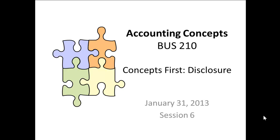Hello, this is a Camtasia PowerPoint voiceover of the January 31st session, which is Session 6 of Business 210. What we're going to focus on today is disclosure and what I like to call CSI accounting, because we're going to figure out what the missing numbers are.